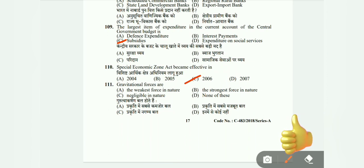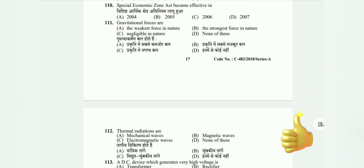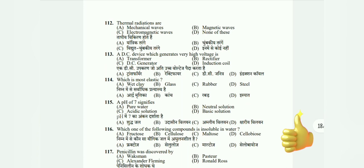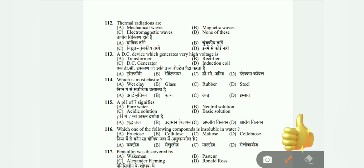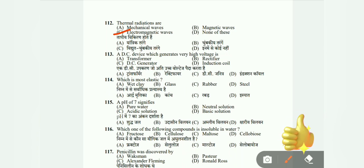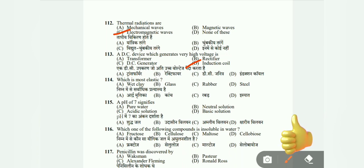Question 111: What are gravitational forces — the weakest force in nature, the strongest force in nature, negligible in nature, or none of these? The correct answer is A, the weakest force in nature. Question 112: What is thermal radiation — mechanical waves, magnetic waves, or electromagnetic waves? The correct answer is C, electromagnetic waves. Question 113: A DC device which generates very high voltage is a transformer, rectifier, DC generator, or induction coil? The answer is D, induction coil. Question 114: Which is the most elastic — wet clay, glass, rubber, or steel? The answer is D, steel.